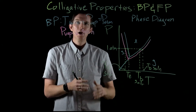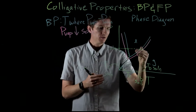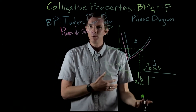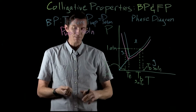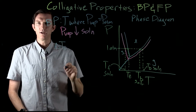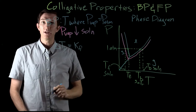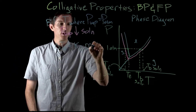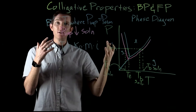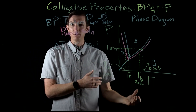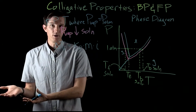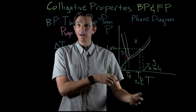Because of vapor pressure depression, the boiling point of our solution is higher and the freezing point is lower than for the pure solvent. We can represent this mathematically: the change in freezing point, delta T_f, equals a freezing point depression constant K_f times the molality of our solution times the Van't Hoff factor. The Van't Hoff factor tells us how many solute particles we get per mole of solute dissolved — for example, one mole of sucrose gives one mole of solute particles.